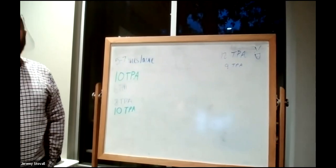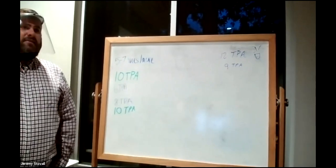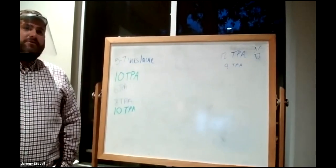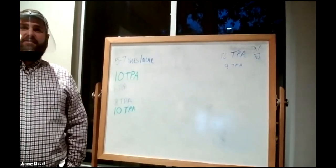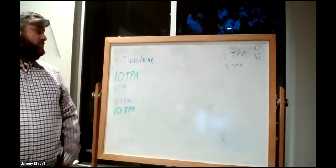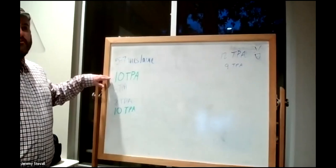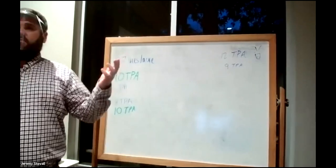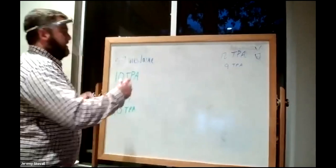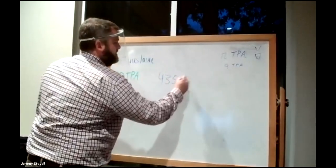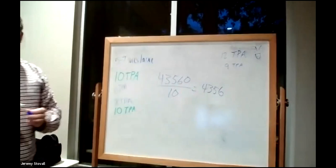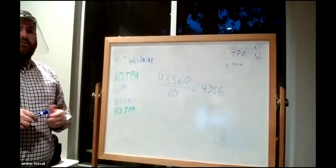What sort of math were you doing to arrive at this? For ten trees per acre, you're counting on each tree to be responsible for regenerating a tenth of an acre. We know an acre is 43,560 square feet per acre divided by 10, which equals 4,356 square feet that each tree is going to be responsible for regenerating.